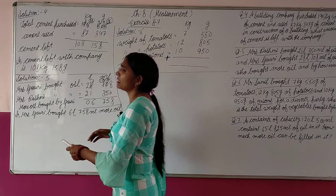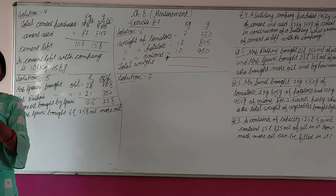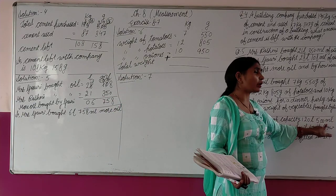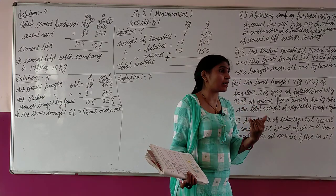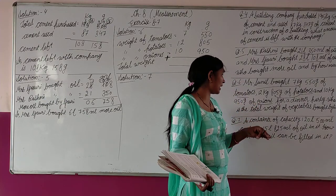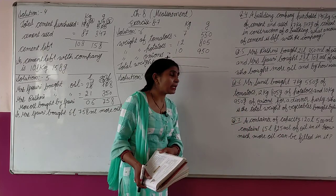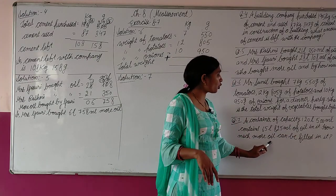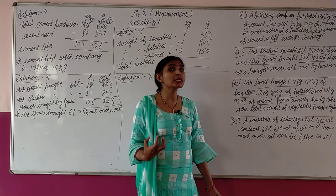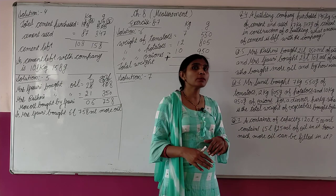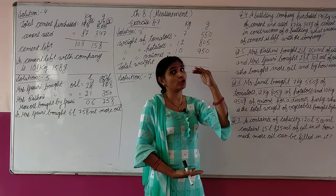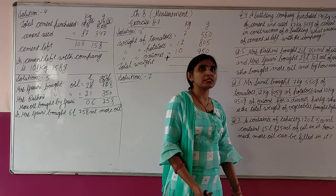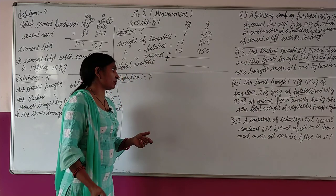The container's total capacity is 120 liter 500 milliliter. The oil already filled in it is 65 liter 825 milliliter. The container is not completely full. How much more oil can be filled? We subtract the oil already present from the total capacity to find the remaining space.